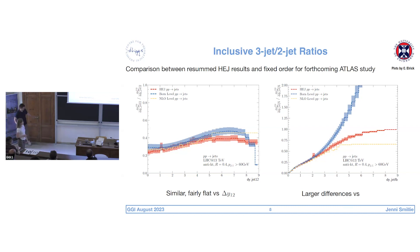So in the meantime, we have to put up with comparing just to fixed order. So here, the red lines are the predictions from high energy jets with these extra all-order logarithms. It's just the dijets, the three-jet and the two-jet processes. And the yellow dashed lines are NLO predictions. And the y-axis here is a ratio of the inclusive three-jet to the inclusive two-jet ratios. So this plot on the left is as a function of the rapidity separation between the hardest two jets.